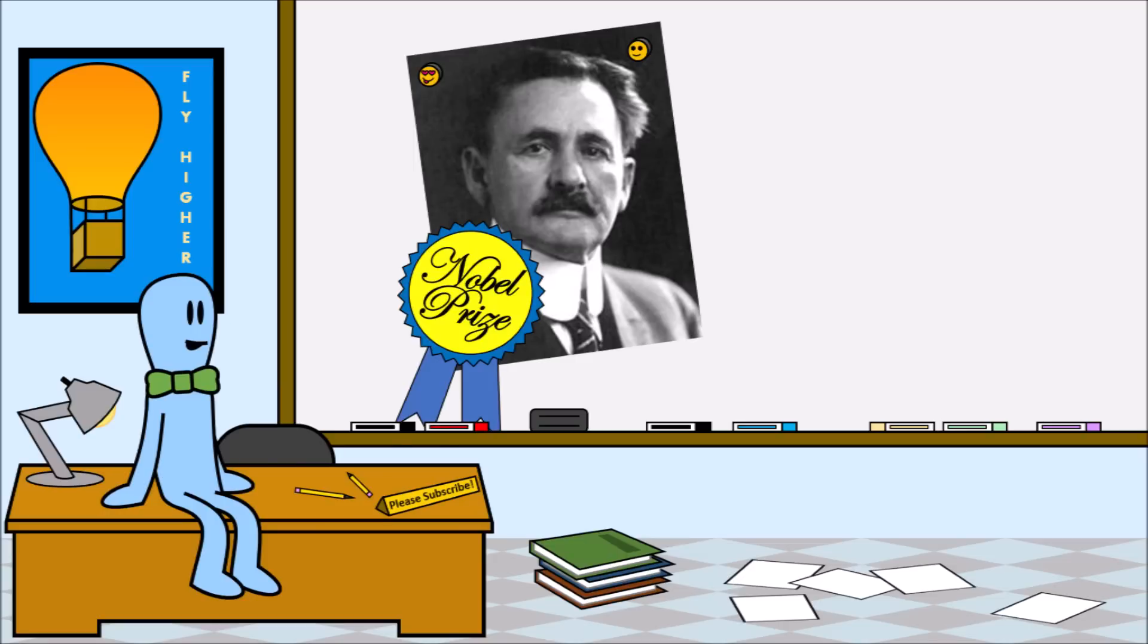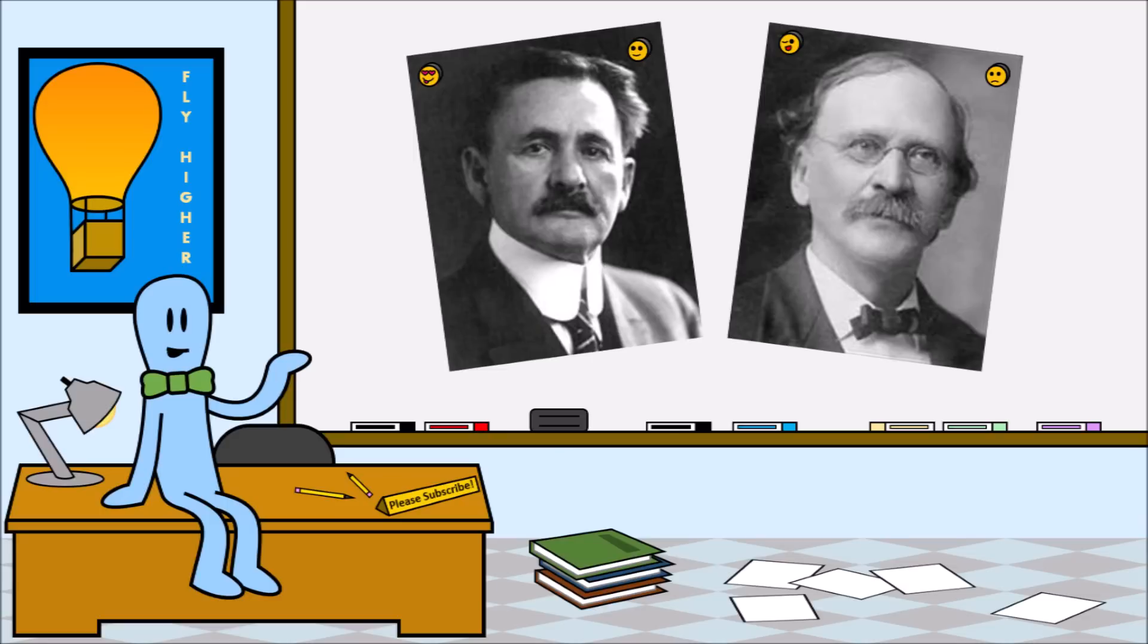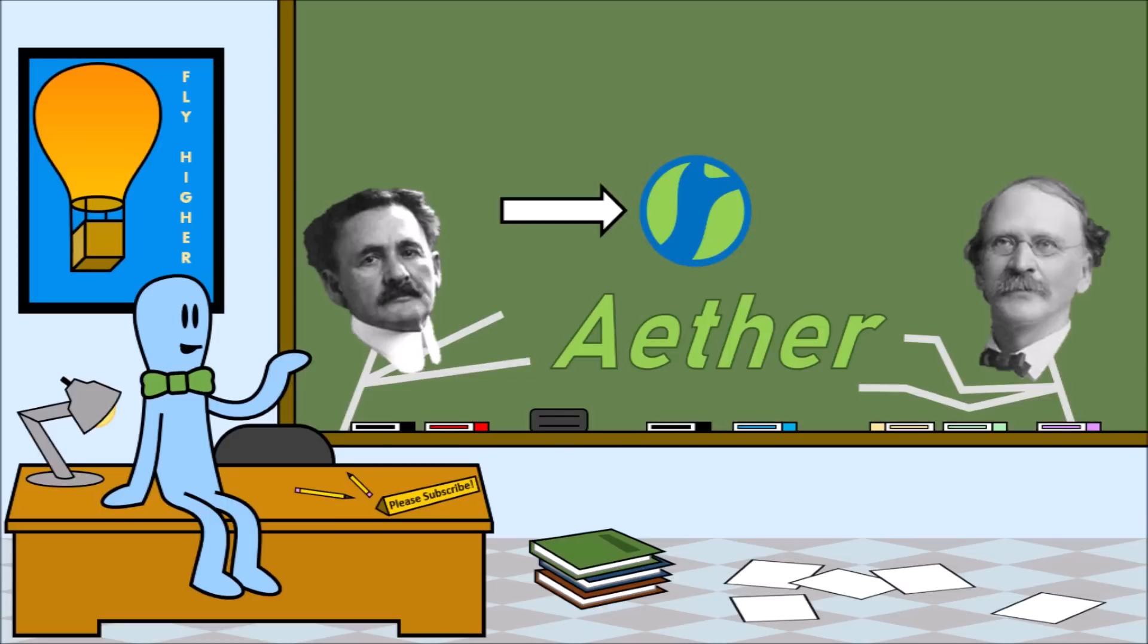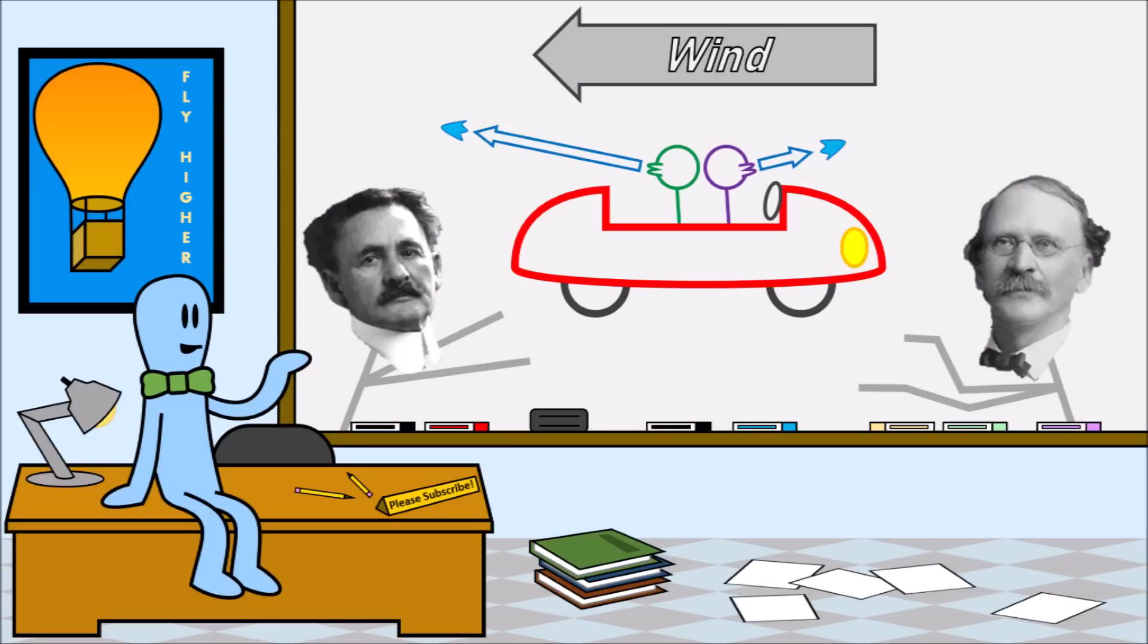In walks Albert A. Michelson, the first American to win the Nobel Prize in Science, and Edward W. Morley, who can tell you how heavy oxygen is. They thought of a way to test and prove aether theory. If the Earth is moving through space, then it must be moving through the aether, creating an aether wind. And if they measure the speed of light in different directions, it would be slower into the aether wind and faster away from the aether wind, just like spinning in a convertible.